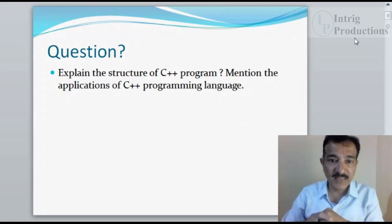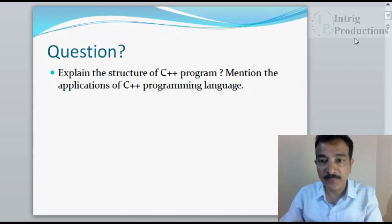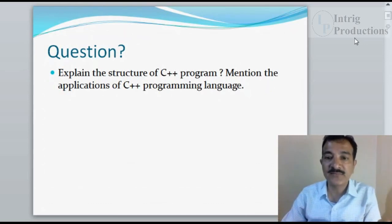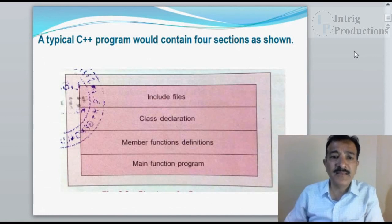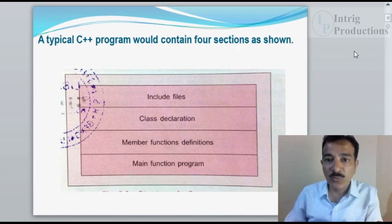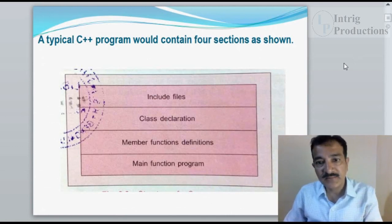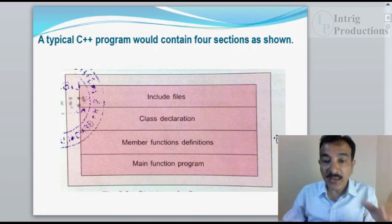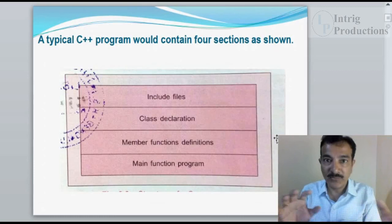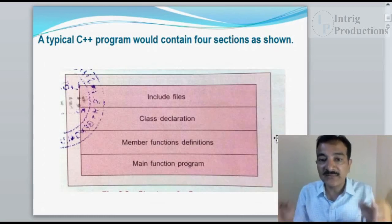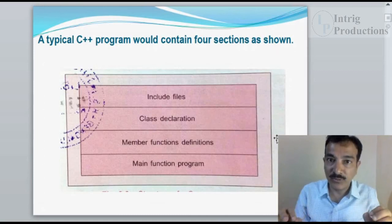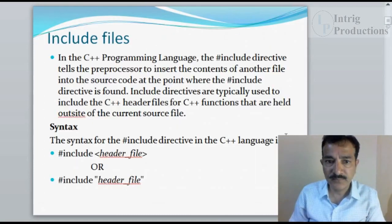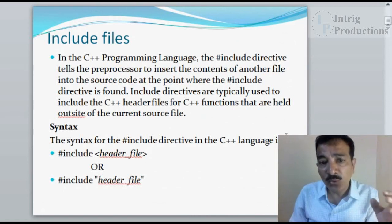This is the first question: explain the structure of a C++ program and mention the applications of C++ programming language. A typical C++ program would contain four sections: an include section, a class declaration section. Inside the class declaration you would have member functions and data members, and outside the class you will have the main function.